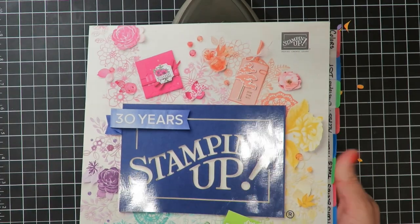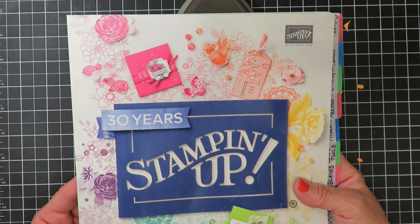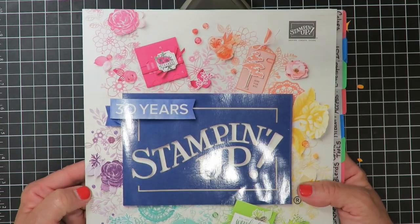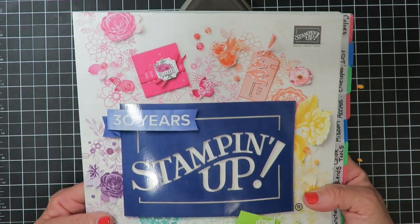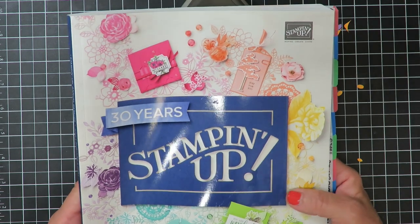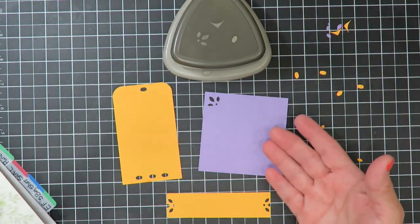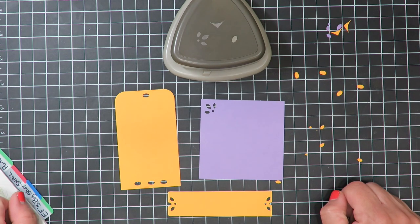If you don't already have a Stampin' Up demonstrator and you're interested in receiving a complimentary copy of the brand new annual catalog that came out in June of 2018 and are interested in Stampin' Up supplies, I would be happy to send you one. Just leave me contact information below so I can get your address. Thanks so much for joining me today everyone. I look forward to seeing you next week for another quick tip.